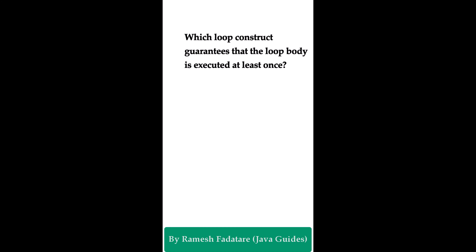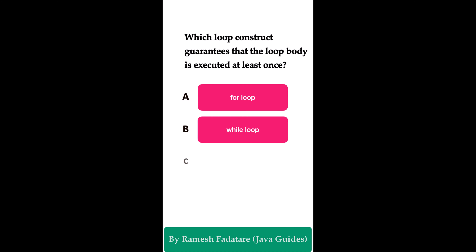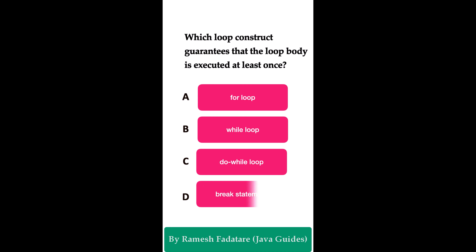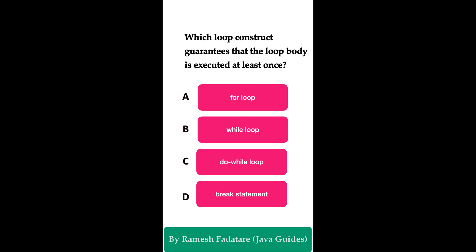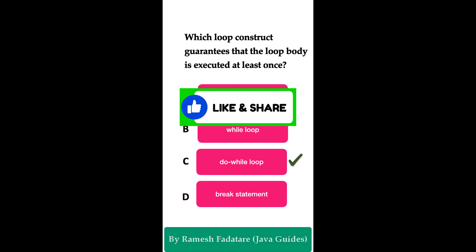Which loop construct guarantees that the loop body is executed at least once? Option A: for loop. Option B: while loop. Option C: do-while loop. Option D: break statement. The correct answer is do-while loop. The do-while loop guarantees the loop body executes at least once because it checks the condition after executing the loop body, ensuring the body runs at least once regardless of the condition's initial truth value.